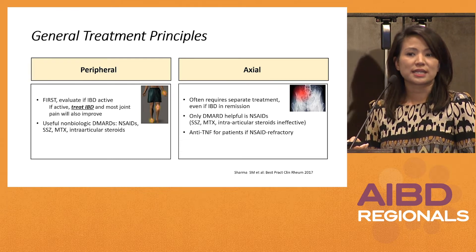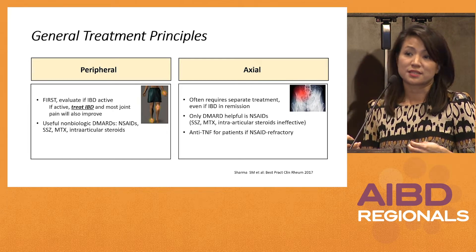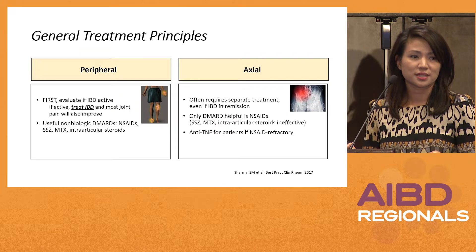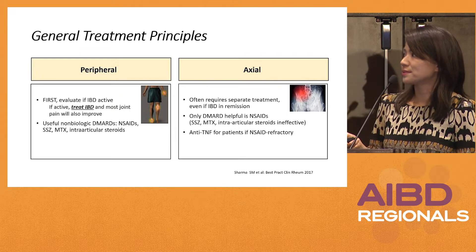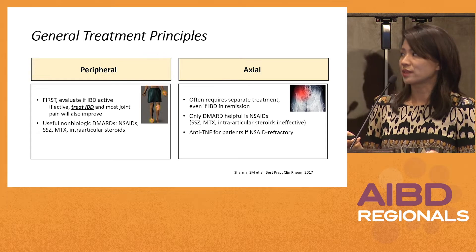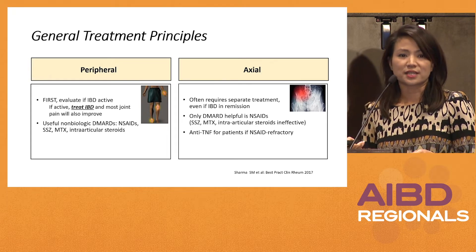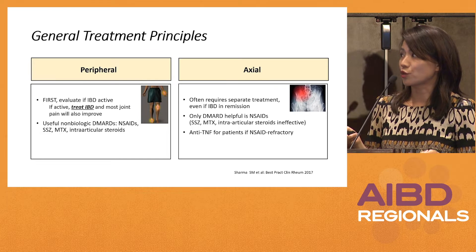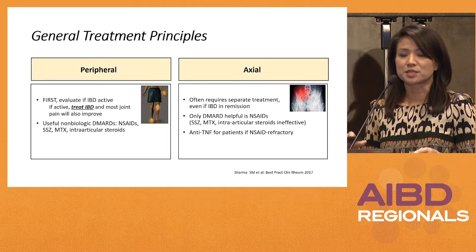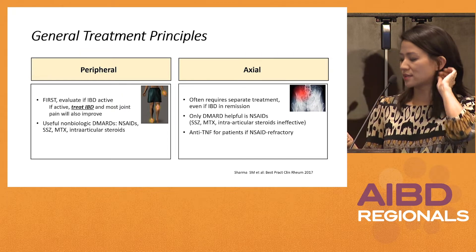First line for axial arthritis is NSAIDs — and I'm going to be sharing some updated data that NSAIDs are probably safer than we have historically thought for use in our IBD patients. But if NSAIDs are not effective or patients do not tolerate them, then the only other therapy that's been shown to be effective for axial arthritis is anti-TNFs. The other non-biologic DMARDs such as methotrexate or sulfasalazine are actually not effective for axial arthritis.